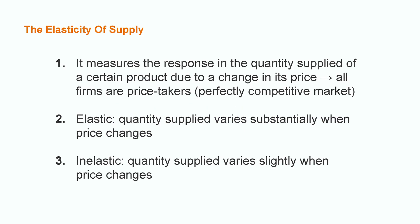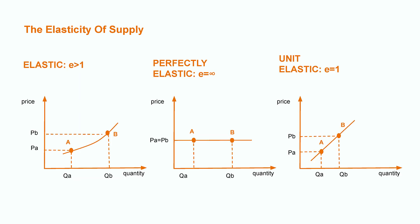Now we have the elasticity of supply. This is quite similar to the price elasticity for demand, since it measures changes in the quantity supplied of a product due to changes in its price. Remember that we are referring to markets which are perfectly competitive, so all firms are price takers. When calculating the elasticity of supply, the results are analogous. An elastic quantity supplied means it changes substantially due to price variations, and it only changes slightly when it is inelastic. This will also determine the slope of the supply curve. Remember that the supply curve is positive, since quantity supplied, as opposed to quantity demanded, has a positive relationship with price.